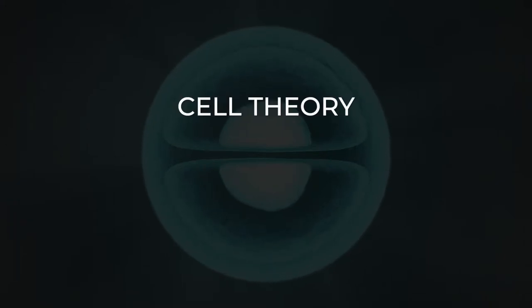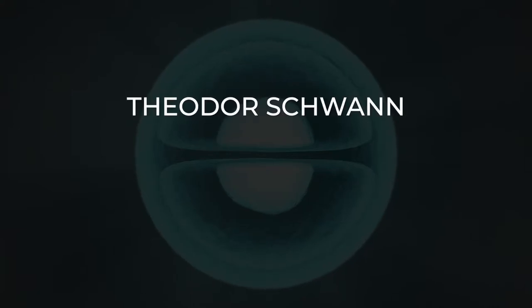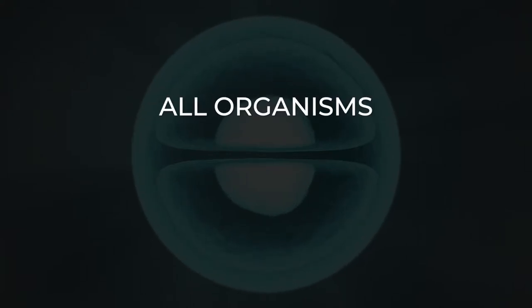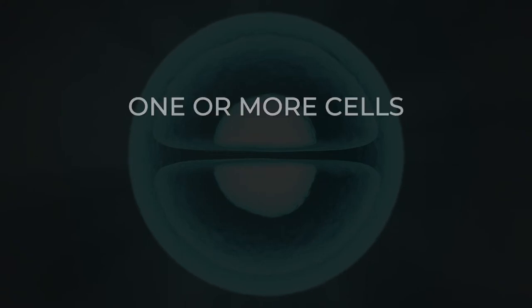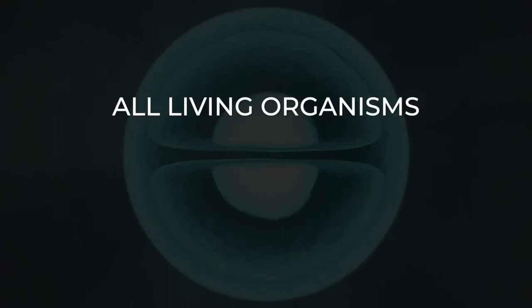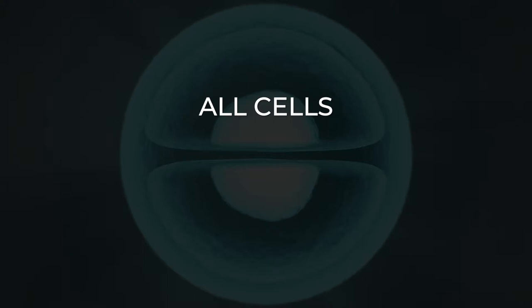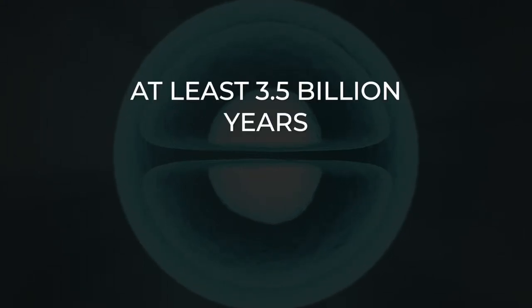Cell theory, first developed in 1839 by Matthias Jacob Schleiden and Theodor Schwann, states that all organisms are composed of one or more cells, that cells are the fundamental unit of structure and function in all living organisms, and that all cells come from pre-existing cells. Cells emerged on Earth at least 3.5 billion years ago.